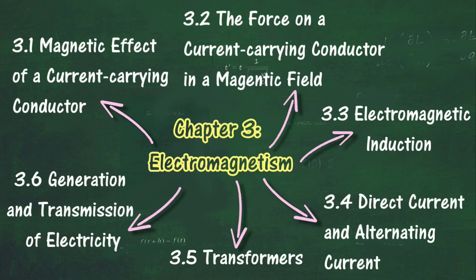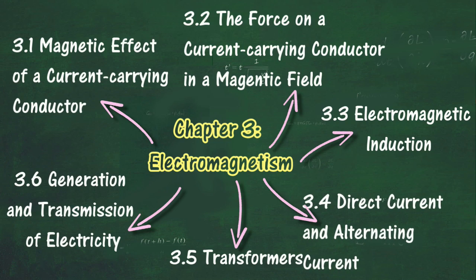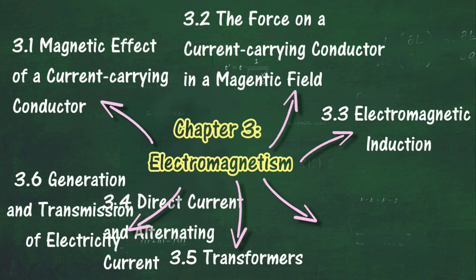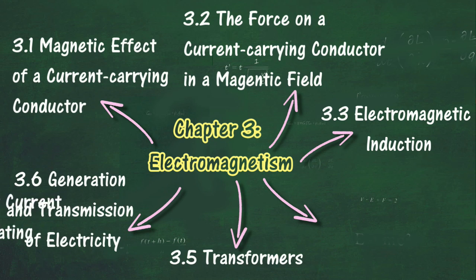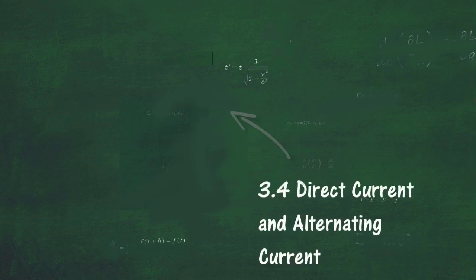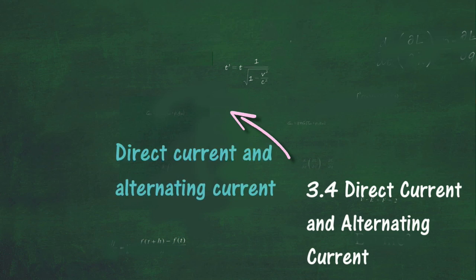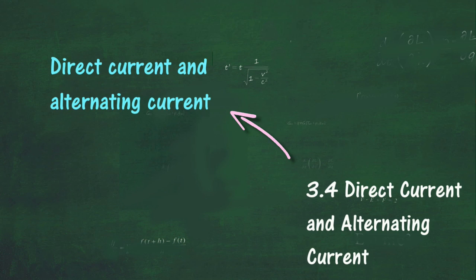In section 3.4, we will learn about direct current and alternating current. At the end of this section, you should be able to compare direct current and alternating current.